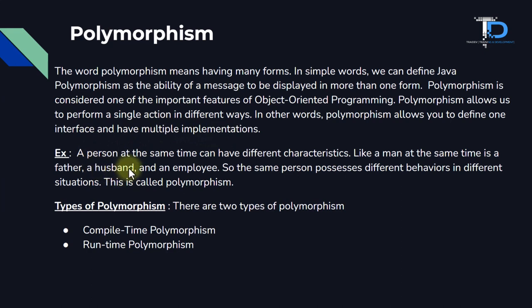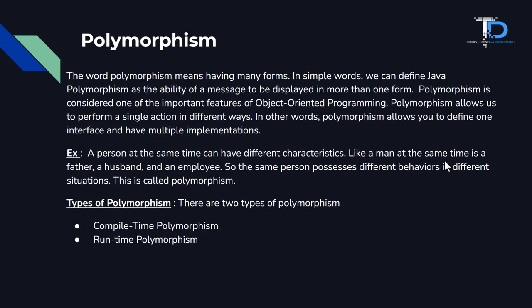A person at the same time can have different characteristics. Like, a man at the same time is a father, a husband, and an employee. The same person possesses different behaviors in different situations — this is called polymorphism. This is a real-time example of polymorphism.